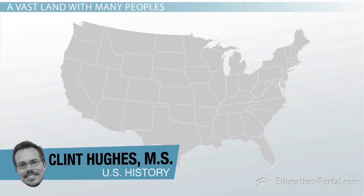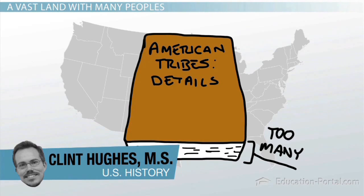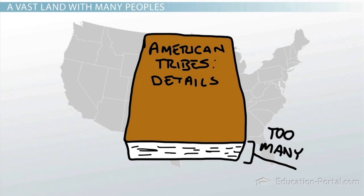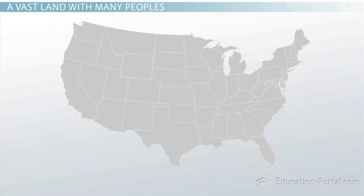First, we have to recognize that this is a U.S. history course. To give complete details of the many nations that existed in what is today the U.S. is far beyond our scope. To give you an idea of the diverse cultures that inhabited the land before Europeans arrived, we'll be discussing the cultural groups of Native Americans, not in all of North America, but instead just those within the lower 48.